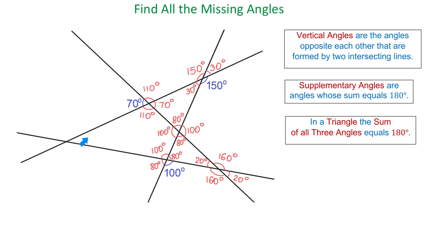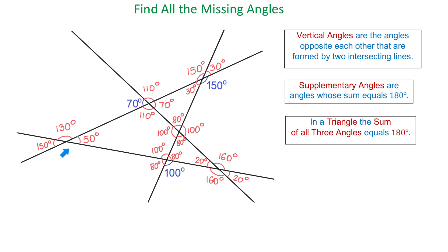Now we have four more angles to find. Let's start with this angle. There are different ways of finding this angle, and one way is to use this big triangle. If in this triangle one angle measures 110 degrees and the other angle 20 degrees, then this angle must measure 50 degrees — 110 plus 20 is 130, plus 50 is 180. Then this angle also measures 50 degrees. And if this angle is 50 degrees, then this one must measure 130 degrees. The last angle is also 130 degrees.